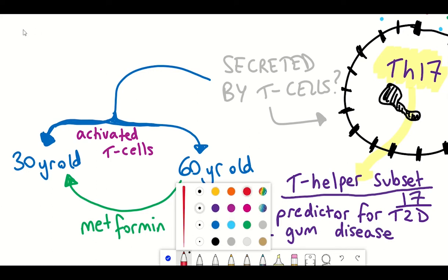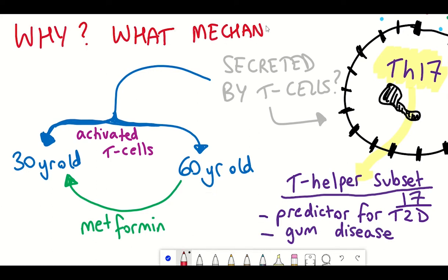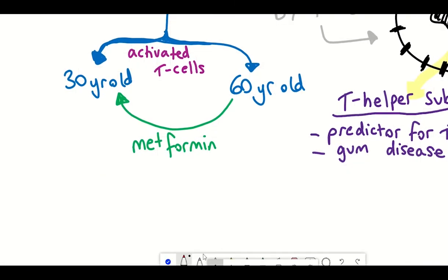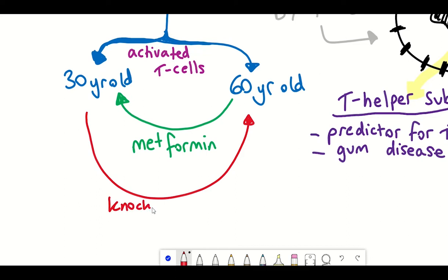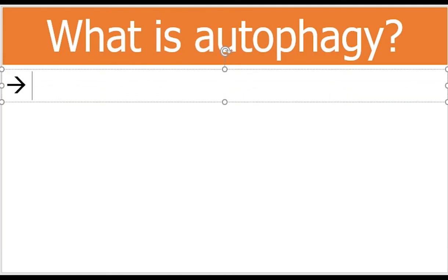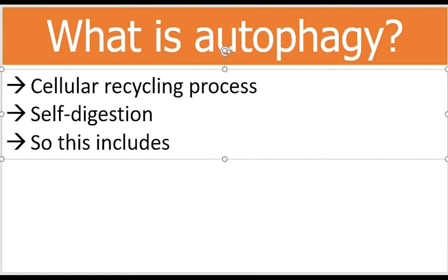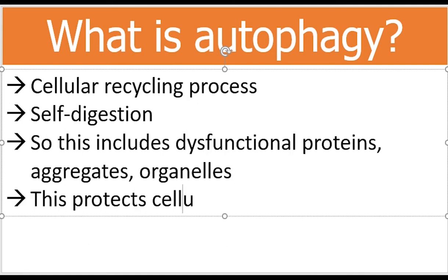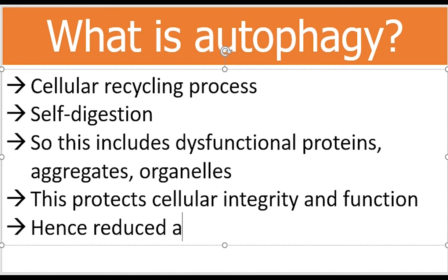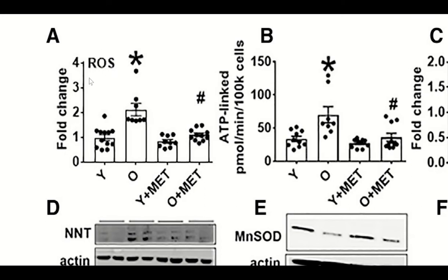So what has happened in the older T cells to enable them to secrete more of these TH17 cytokines? There were two key lines of evidence that helped elucidate this question. The first was that when they knocked down autophagy in the young T cells, they actually activated this TH17 profile in the young cells. Autophagy is a cellular process that removes unnecessary and dysfunctional components, including damaged proteins and organelles. The second line of evidence was that the older T cells had increased levels of reactive oxygen species, and these levels were reduced when metformin was given to the cells.